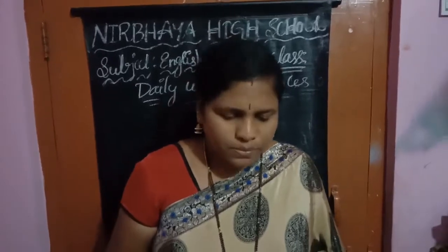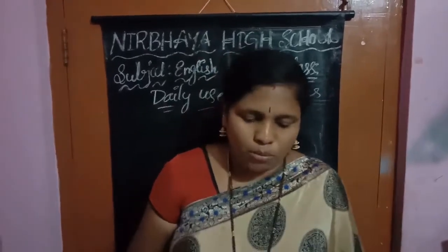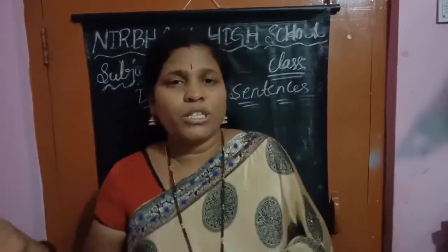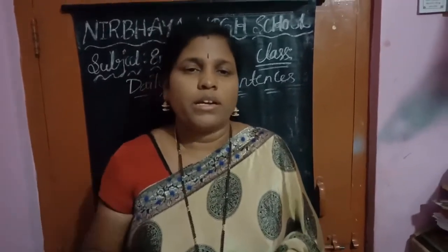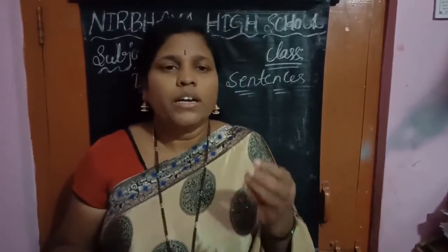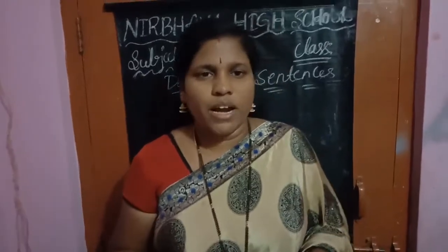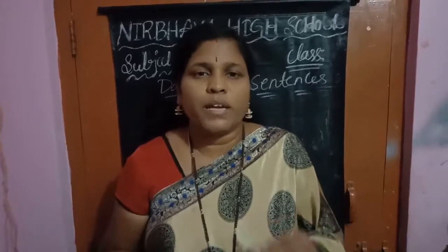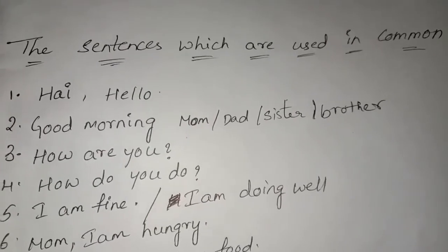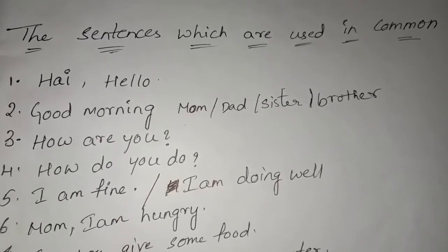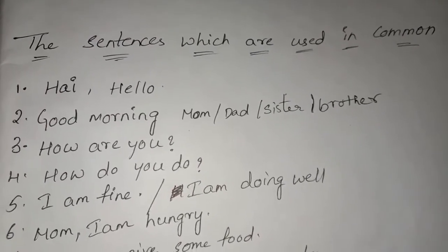Mom, I am hungry — can you give me some food? Mom, please give me some water. Dad, can you play with me? Mom, I have completed my work. Mom, please give me permission to play. Or: Mom, can you give me permission to watch TV? Mom, can I go for playing? Mom, I am going to play. These are simple sentences used in our daily life. You can use these words and these sentences.